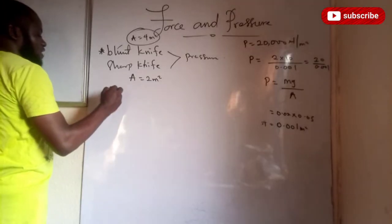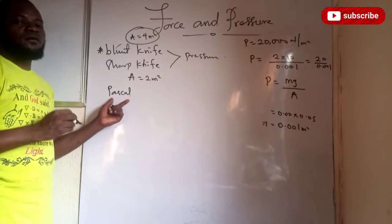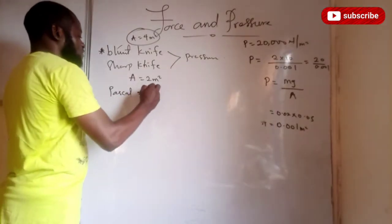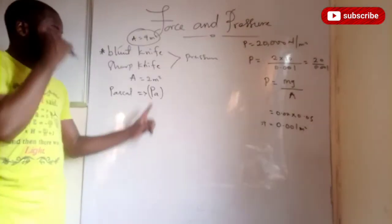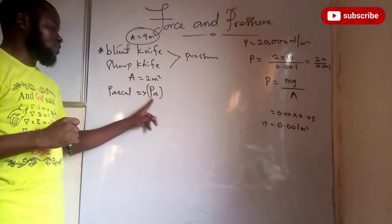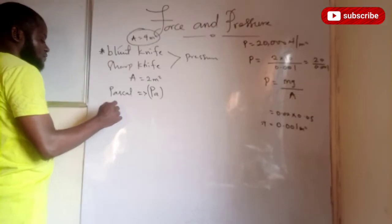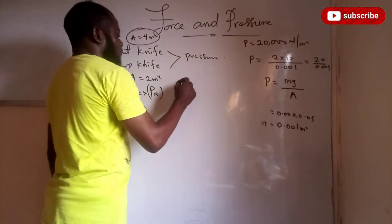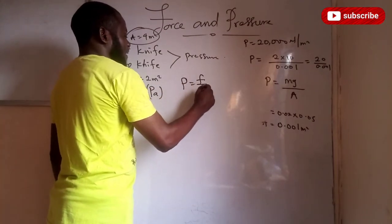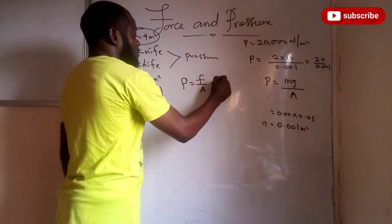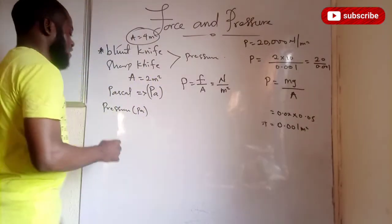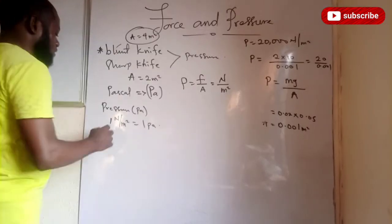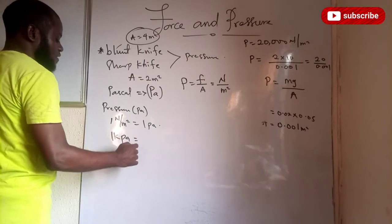Now let's look at the unit of pressure. Pressure is measured in pascal. If you are writing it in full, you write it in small letters. If you are writing it in short form, you write capital P and small a — 'Pa'. This is the unit for pressure. Force is measured in newtons and area is measured in meter squared, therefore one newton per meter squared is equivalent to one pascal.